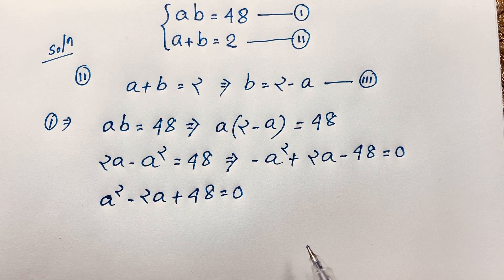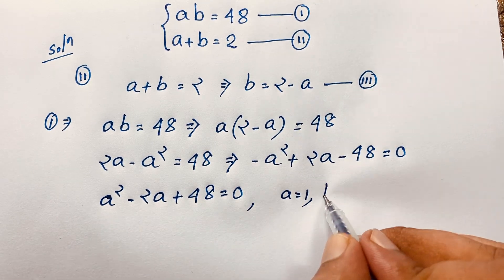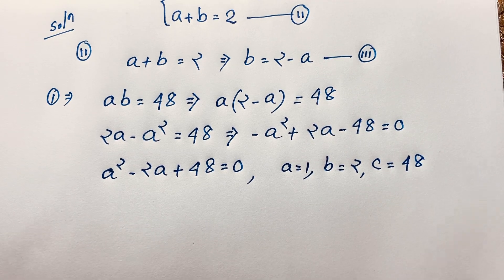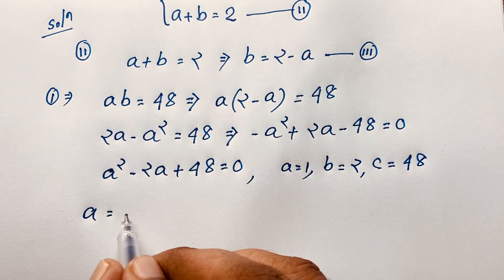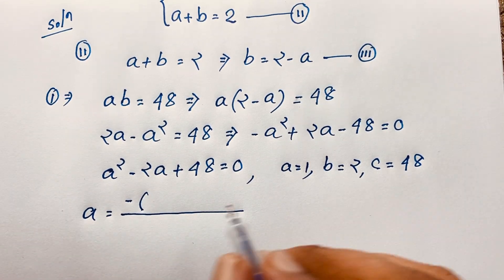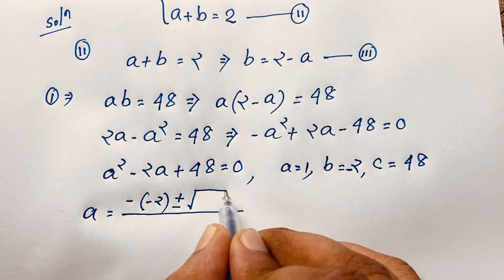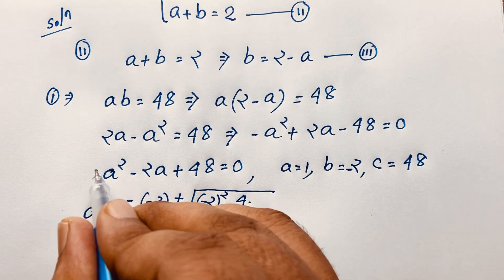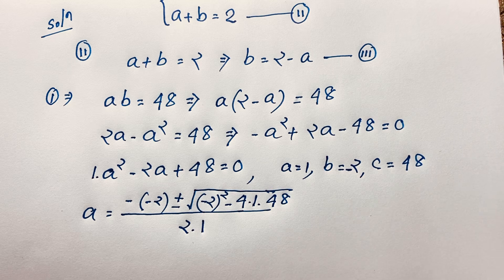So we have a nice quadratic equation where a equals 1, b equals 2, and c equals 48. Applying the quadratic formula: a equals negative b — b is 2, so negative 2 — plus or minus square root of b squared minus 4ac, where a is 1 and c is 48, all over 2a where a is 1.